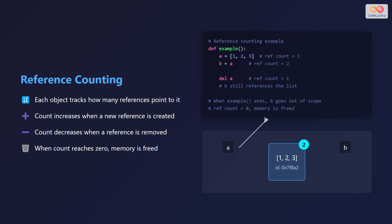Consider this example. First, a list containing the numbers 1, 2, and 3 is created and assigned to the variable A, increasing its reference count to 1. Next, the list is assigned to variable B, increasing the reference count to 2.